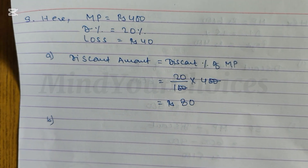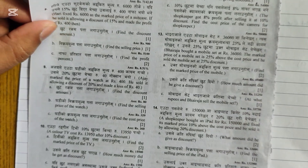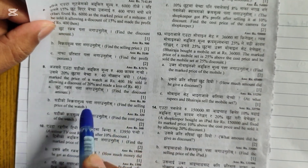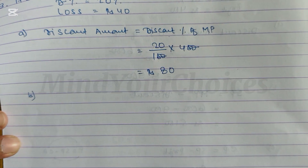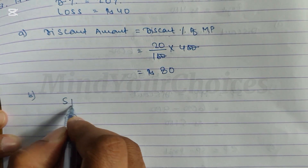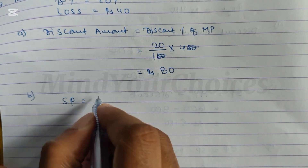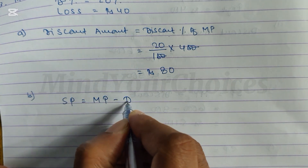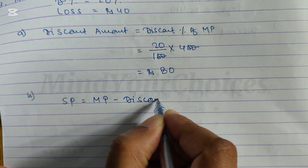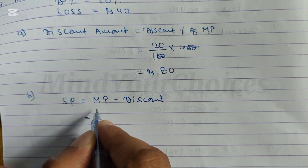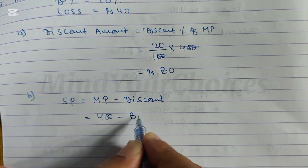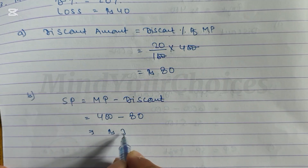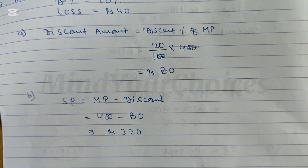Part B: Find the selling price of the watch. The formula for SP is MP minus discount. So SP equals 400 minus 80. When you subtract, we get Rs 320. So Rs 320 is the selling price.